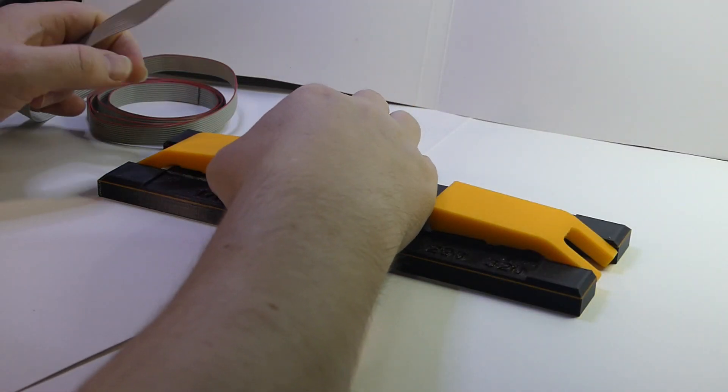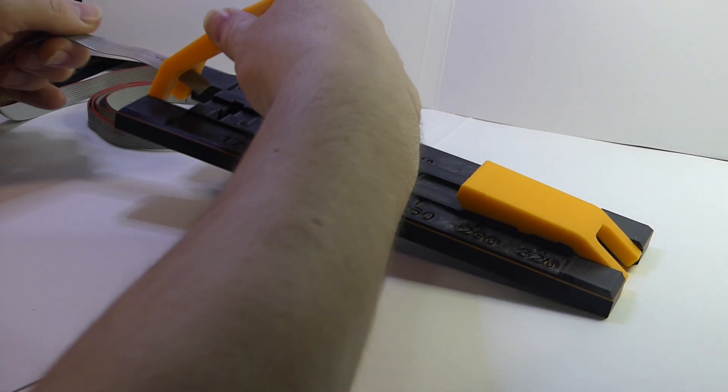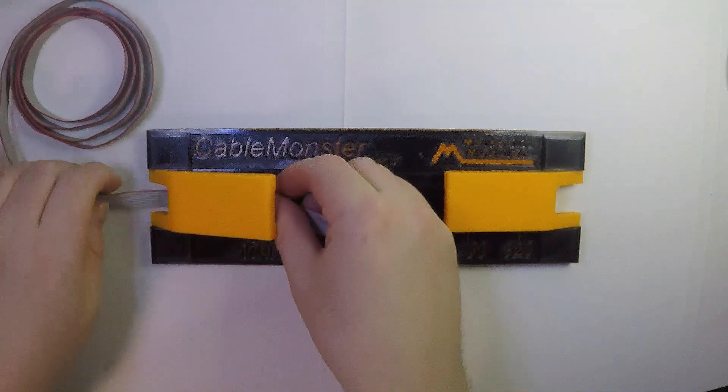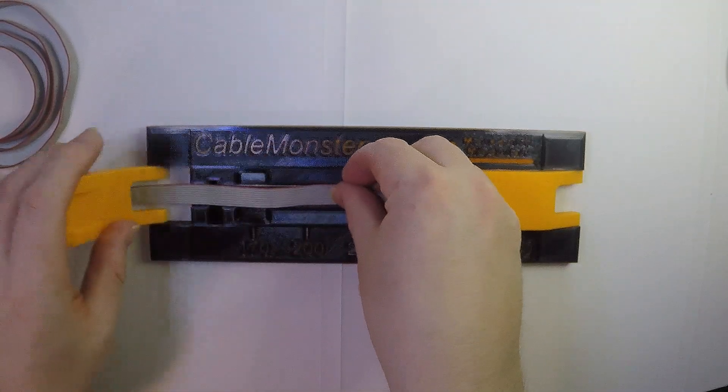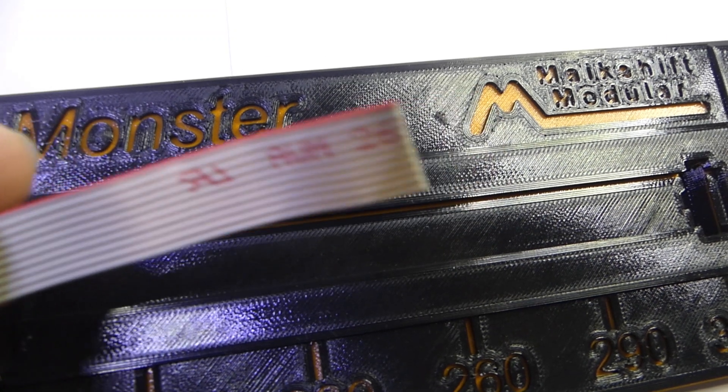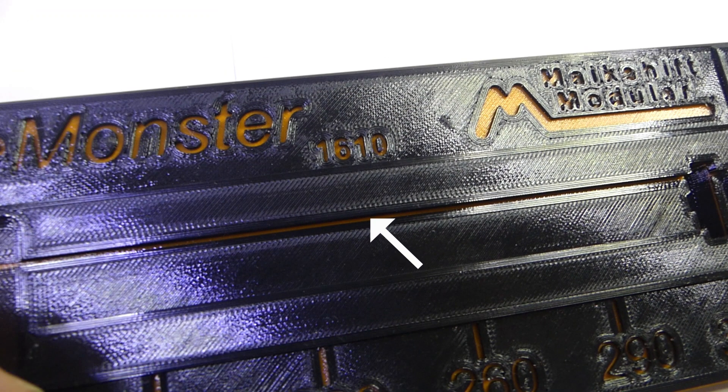We start by threading the ribbon cable through the left lever, lining up the red trace on the ribbon cable with the orange line in the central guide slot.